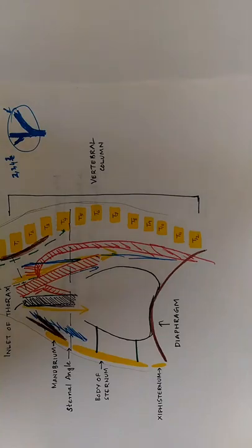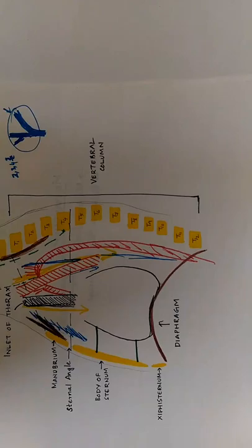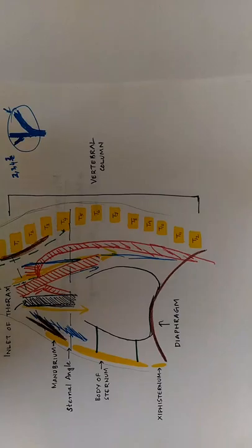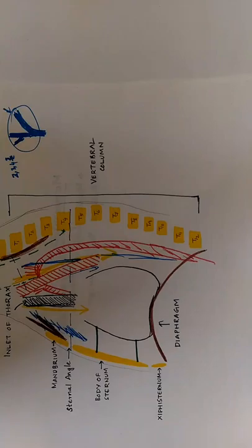In the superior mediastinum, all the large veins are seen on the right side and the arteries are on the left side. When blood flow increases, the veins expand enormously while the arteries do not expand at all. Since the veins can expand enormously, there is much dead space on the right side, and into this space tumors or fluids tend to project.